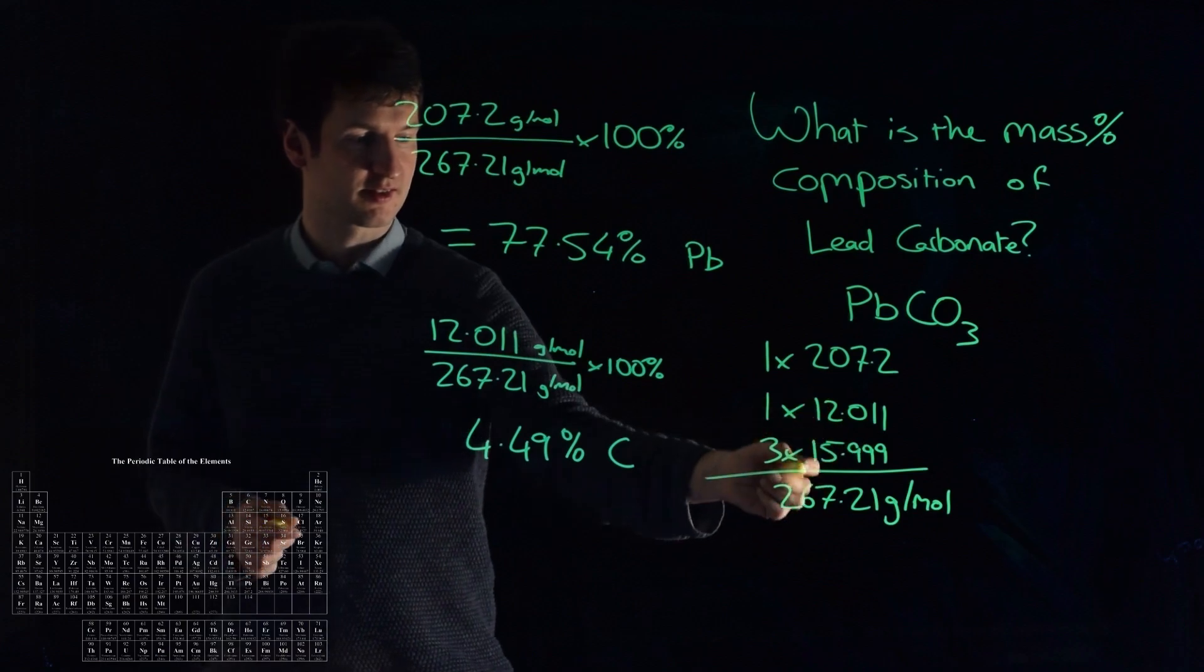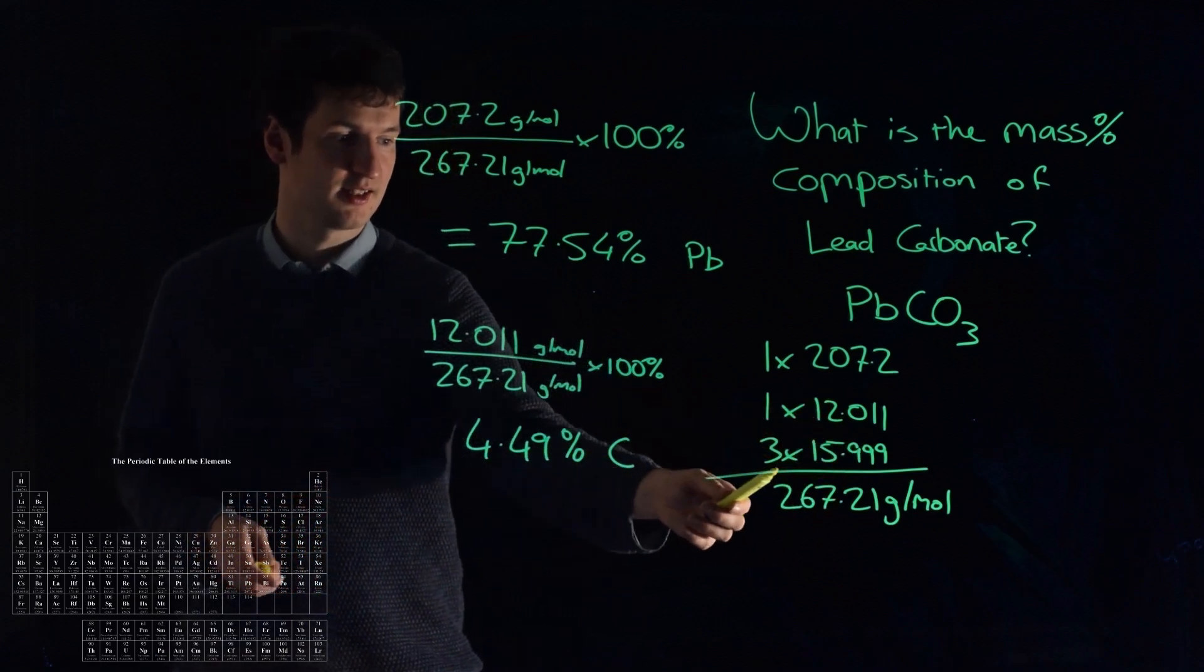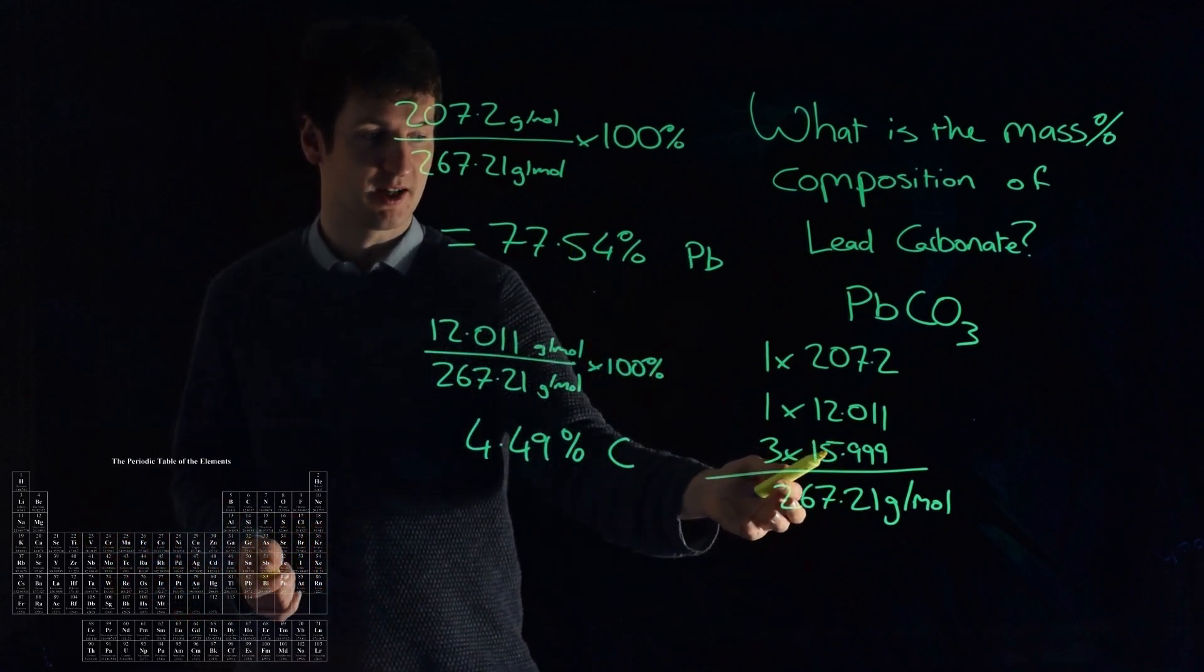So 4.5% of this is carbon. The last element then is oxygen. Seeing as there's only three elements, we can add up this and this and take it away from 100%. The rest of it has to be oxygen.